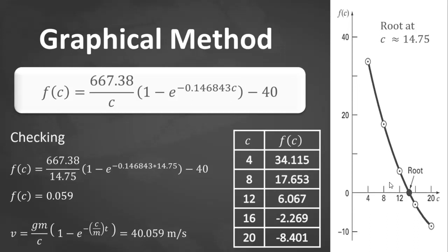The validity of the graphical estimate can be checked by substituting the value of c into the function. So, try to substitute that one and it will result in f of c equal to 0.059. So, quite close to zero.